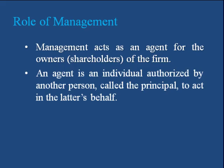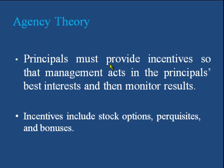This situation of separation of ownership and control creates a problem known as the agency problem. The agency problem states that principals must provide incentives so that management acts in the principal's best interest, and then monitor results. Shareholders, as principals, must provide incentives to enforce management to work in their best interest. These incentives include stock options, perquisites, bonuses, and other similar types, which enforce management to work honestly and in the best interest of principals.